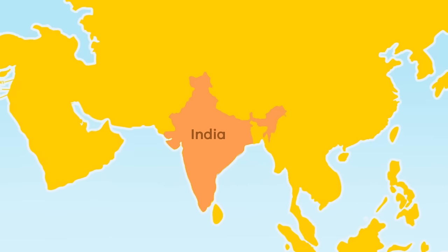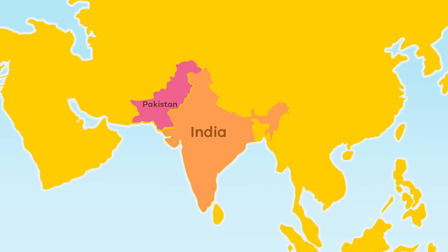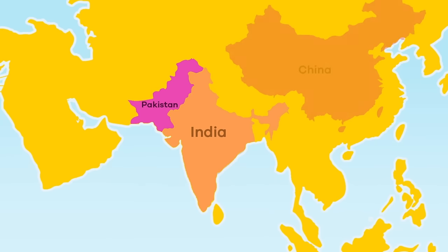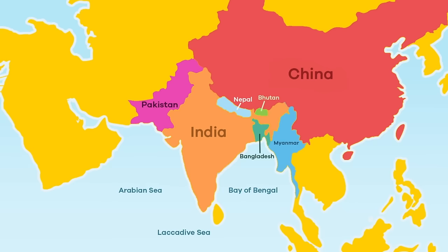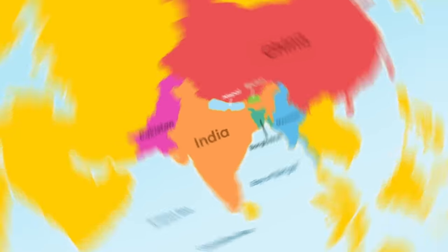India shares a border with Pakistan, China, Nepal, Bangladesh, Bhutan, and Myanmar. Most of the country forms a peninsula, which means it is surrounded by water on three sides.